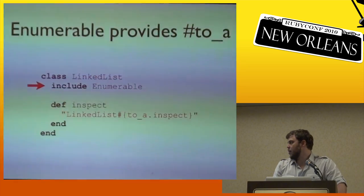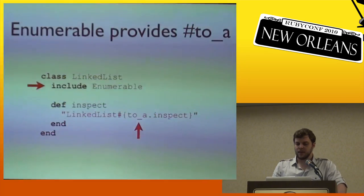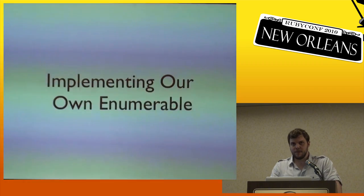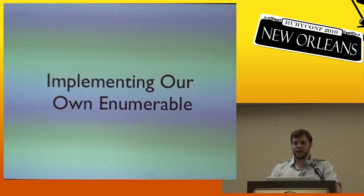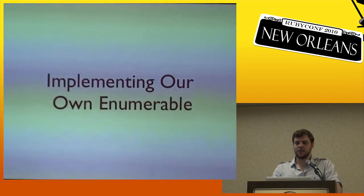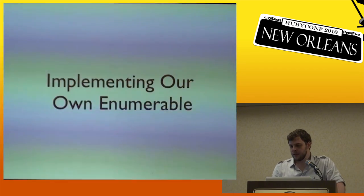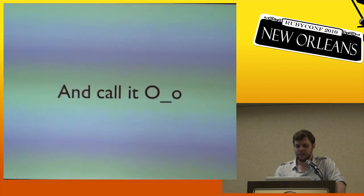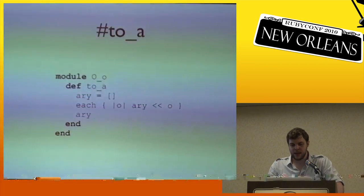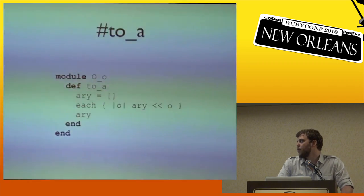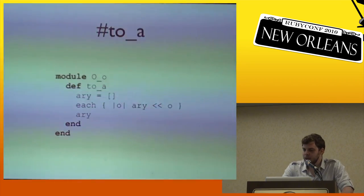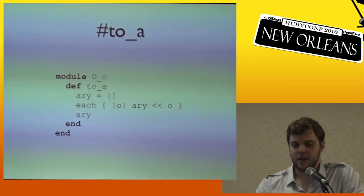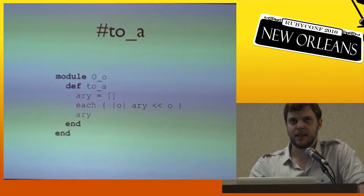Let's talk about Enumerable and how it uses each as the basis method to provide a lot of behavior. Let's pick a few Enumerable methods and talk about implementing them — we'll call the module 'This' since that's a valid module name. Here's a definition of `to_a`: we start with an accumulator — an empty array — and for each item we push it into the array, then return the array. That's `to_a` as implemented in Enumerable.